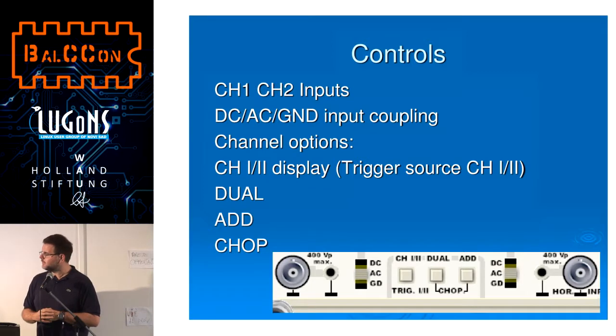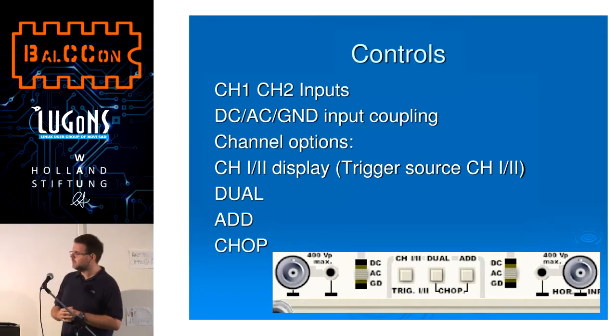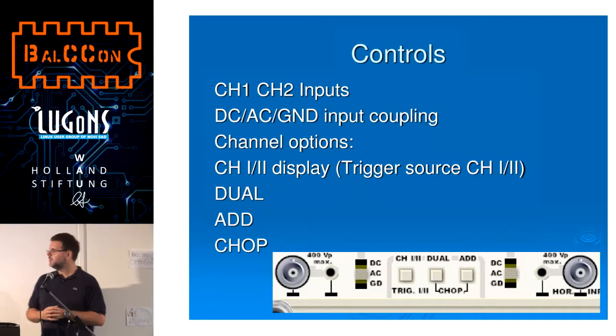There's a DC, AC, and ground switch. Depending on what you're going to measure: DC is for measuring DC voltages, AC for measuring AC voltages, and ground means finding a reference — you can find where the zero level is for your channel. I'll show you why that's important.